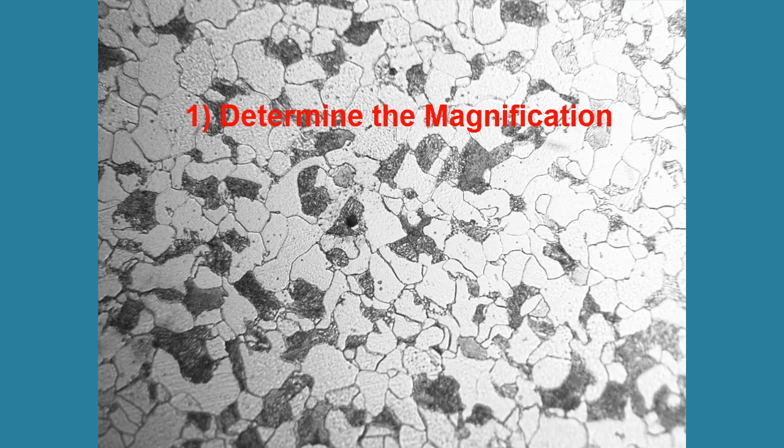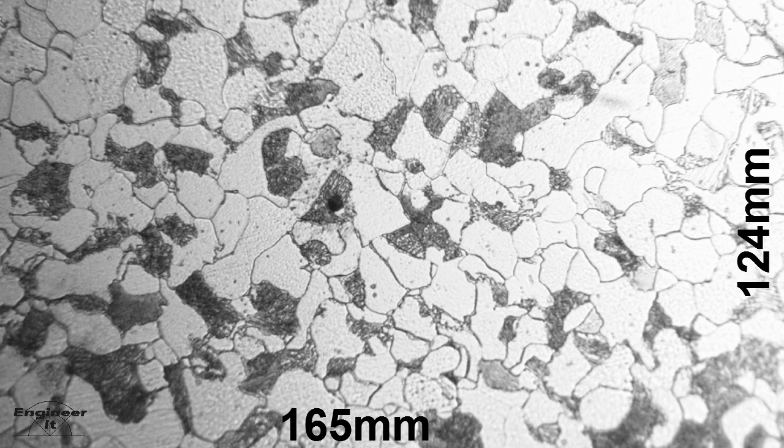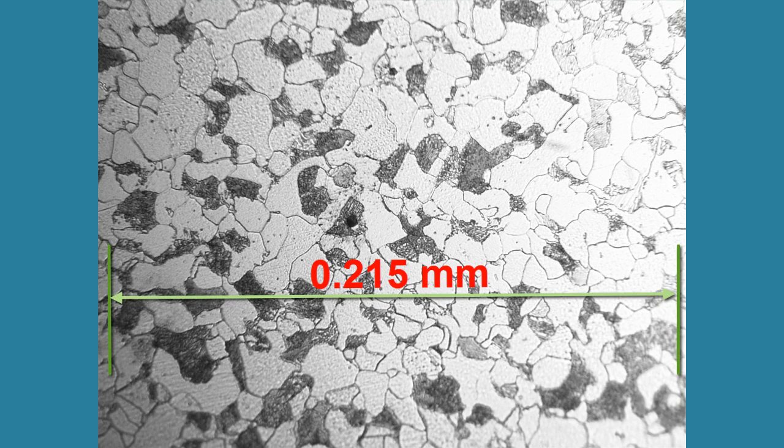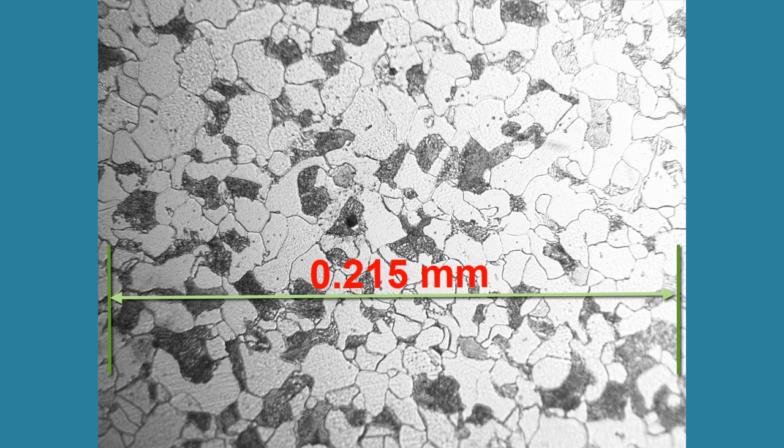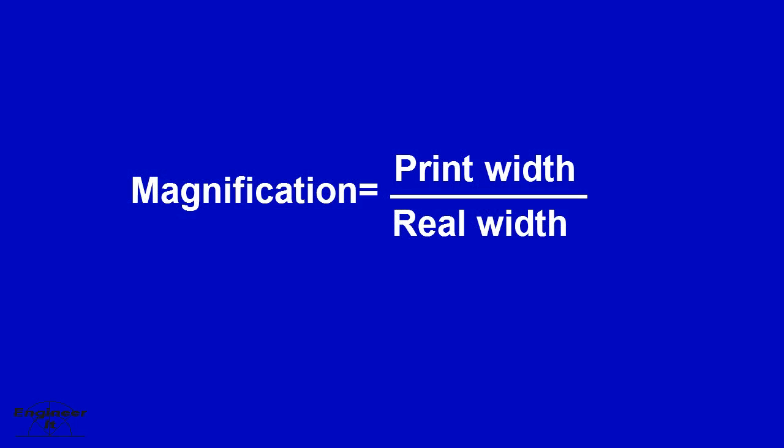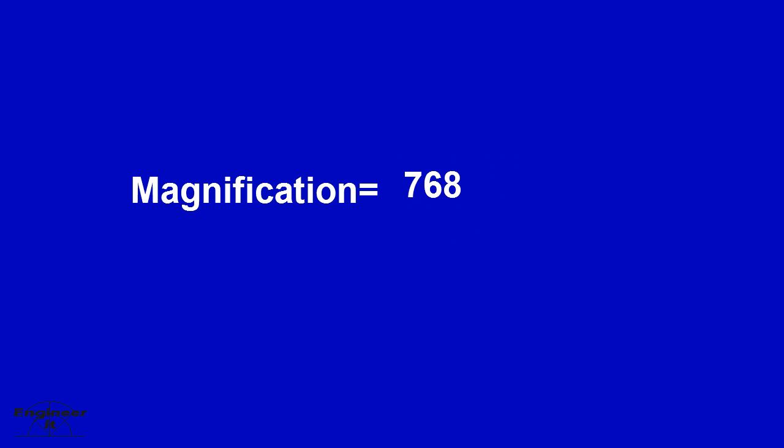Let's start with number 1. Determine the magnification. In order to begin, we must find the print size dimensions of the photo. We can select either the width or the height. Let's use the width of 165 millimeters, which is the width of the photo. The actual width that the photo covers on the steel sample is 0.215 millimeters. Knowing the dimensions, we can solve for the magnification. This solves part 1.